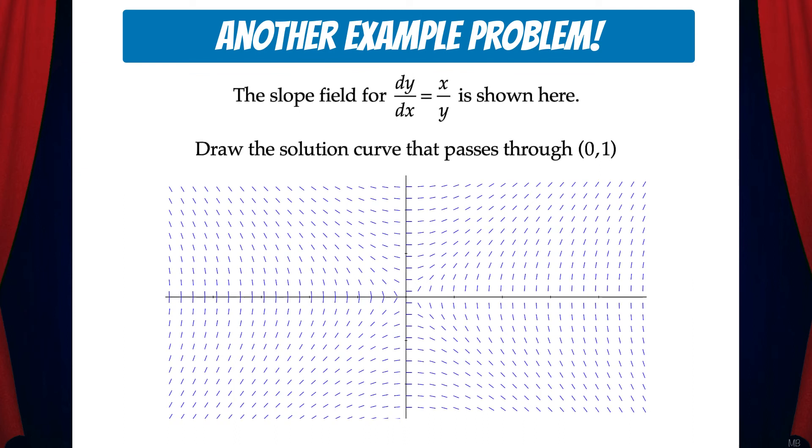Let's do another example problem. The slope field for dy/dx equals x over y is shown here. Draw the solution curve that passes through the point (0,1). So what we'll do is start at the point (0,1) and follow the flow of the slopes.